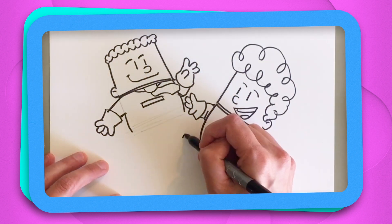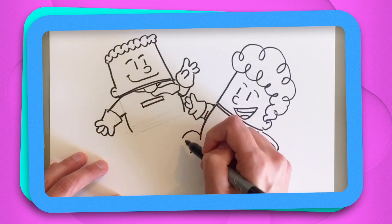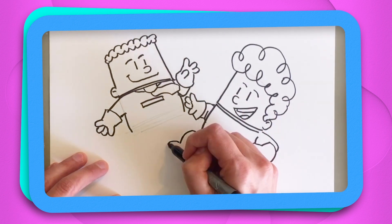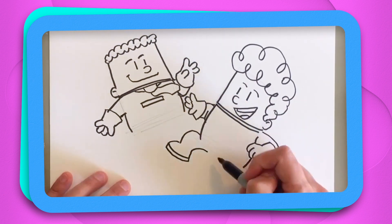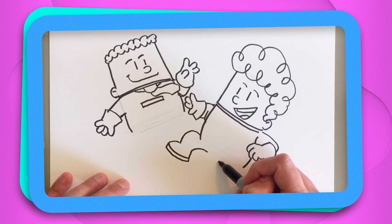And the last thing we need to do for their bodies is give them some legs. Harold's legs, kind of make two little arcs like this. You've got these big moon boots on.